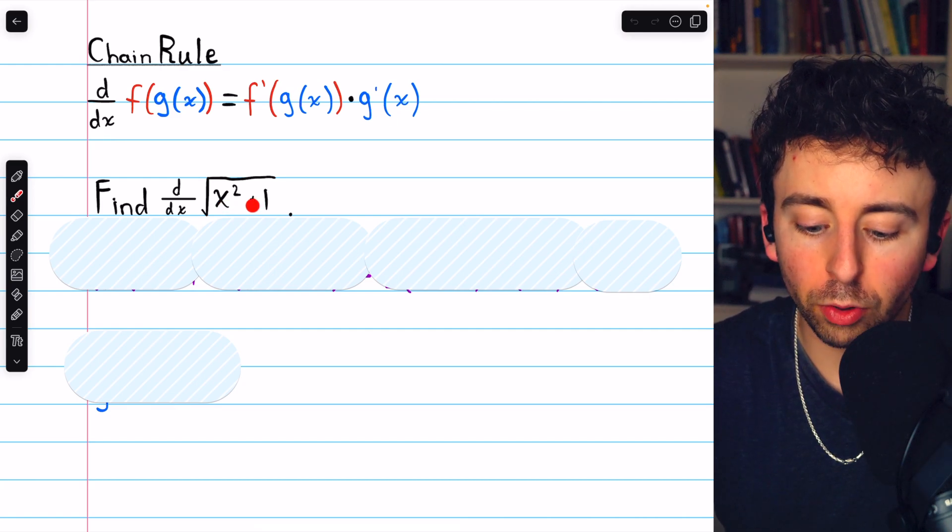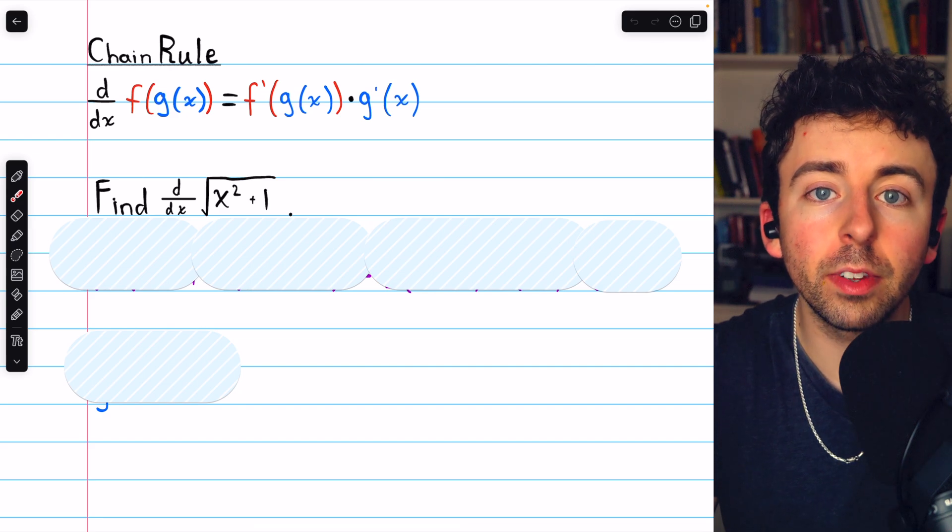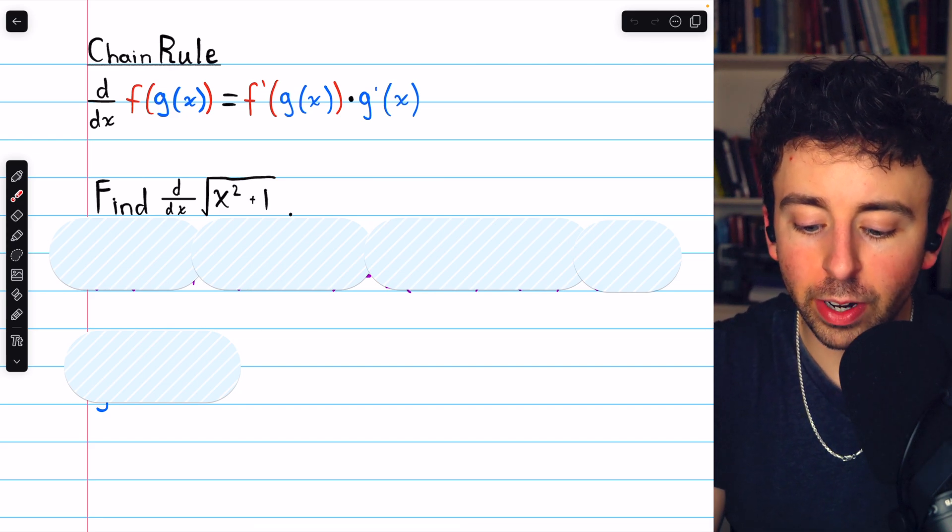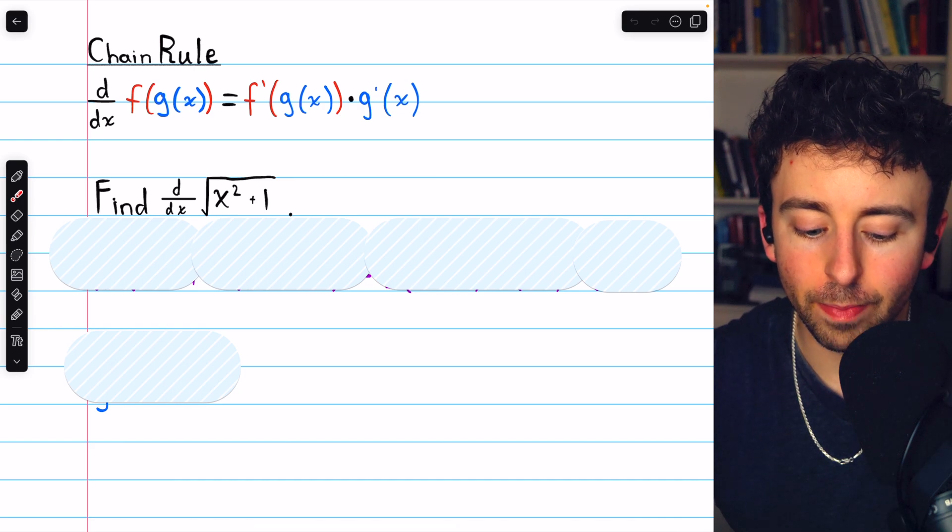The square root of x squared plus 1 is a composite function. So to take its derivative, we have to use the chain rule, which I've written here for your reference: f prime of g times g prime.